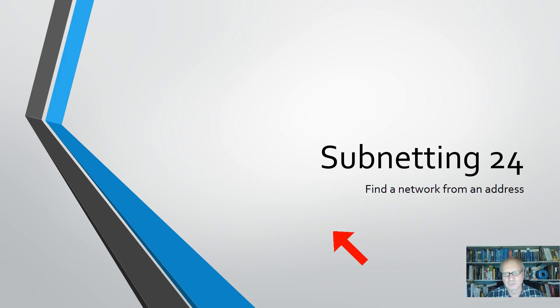You didn't get enough and you're back for more. Okay, this is subnetting video 24. We're going to look at finding a network from an address. We haven't done that before. What we've done so far is look for the list of all the networks and then figure out what addresses we have on those networks. But what if you're given an address and you need to figure out which network it's on?